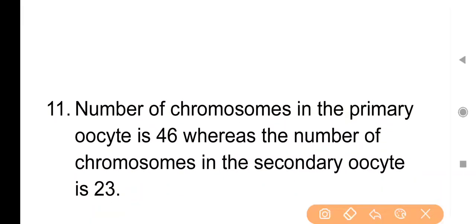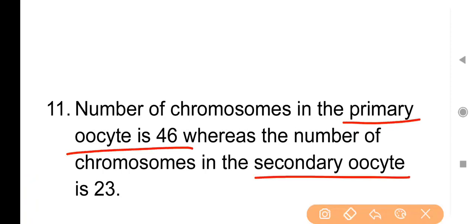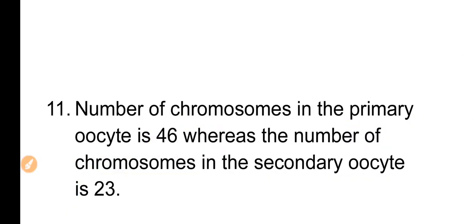Point No. 11: Number of chromosomes in primary oocyte is 46, whereas number of chromosomes in secondary oocyte is 23. Primary oocyte में कुल 46 chromosomes होते हैं और secondary oocyte में 23 होते हैं। Basic but important.